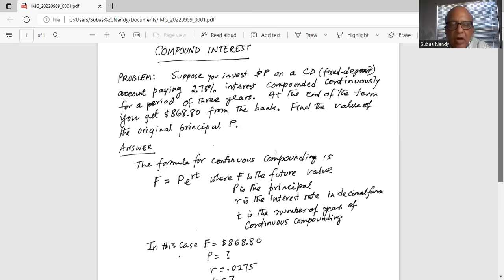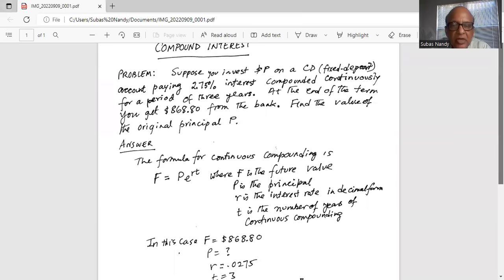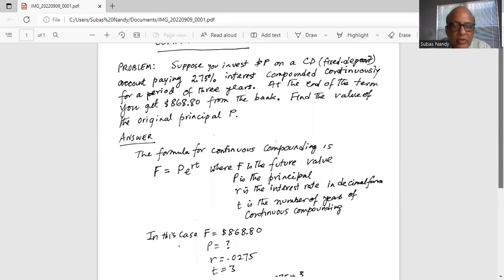raised to the power of R times T. F is the future value, P is the principal, R is the interest rate in decimal form, and T is the number of years of continuous compounding. In this case,